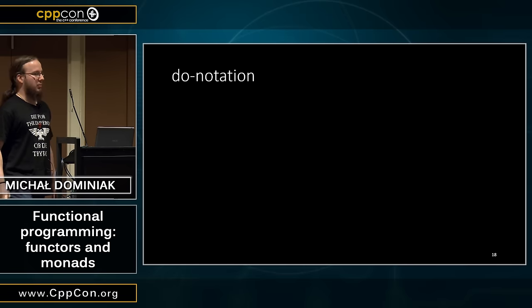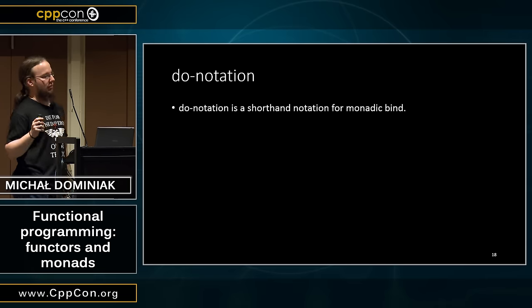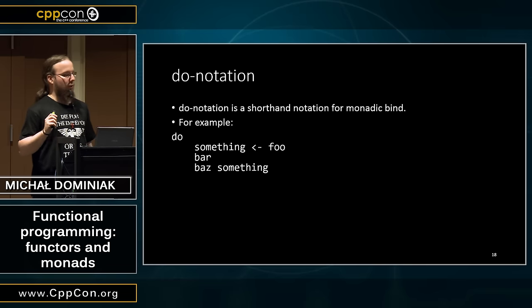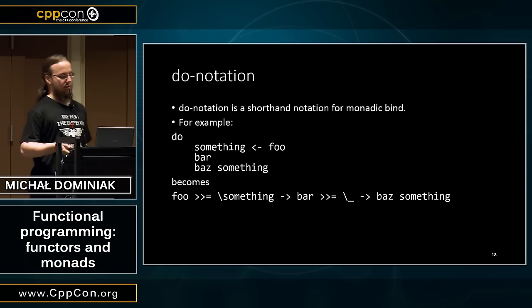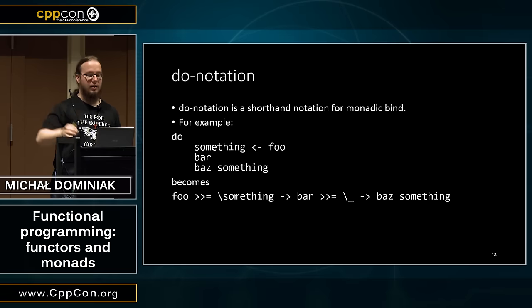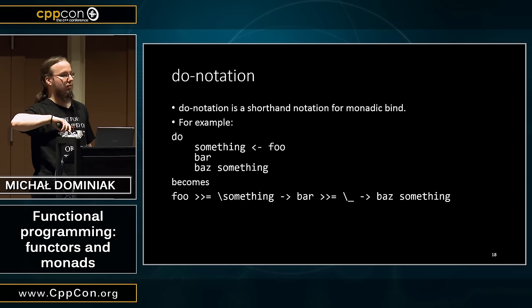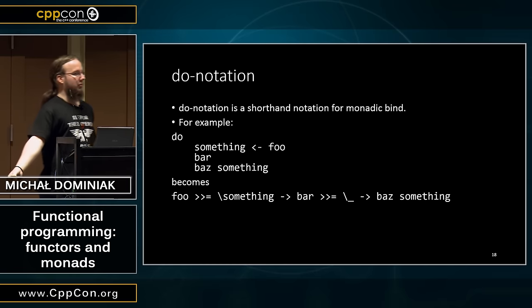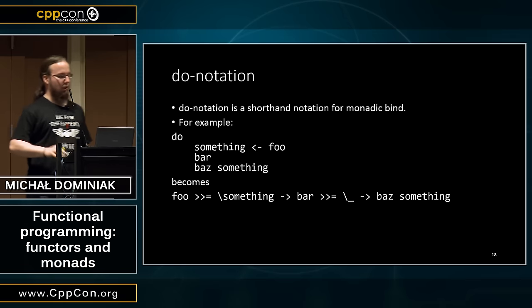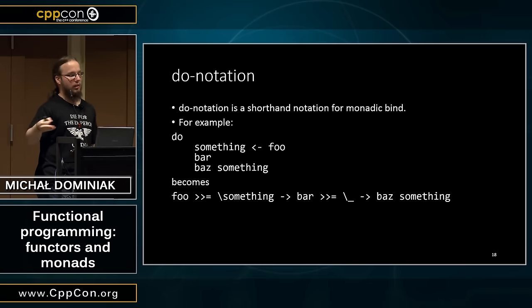So, do notation. You've probably heard about it at least once, and it probably was like 'haha, C++ doesn't have do notation.' It's a shorthand for monadic bind. For example, a do block becomes something like a chain of monadic binds — backslash something means a lambda that names its argument, and the underscore means a lambda that takes a value but we don't care about it. So this calls foo, saves its result, then calls bar, then calls baz with something — unless there was a problem, if this is an optional or Maybe.